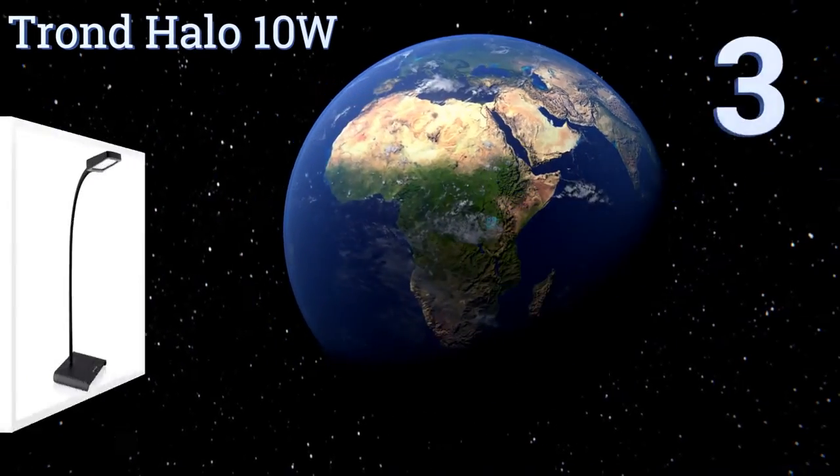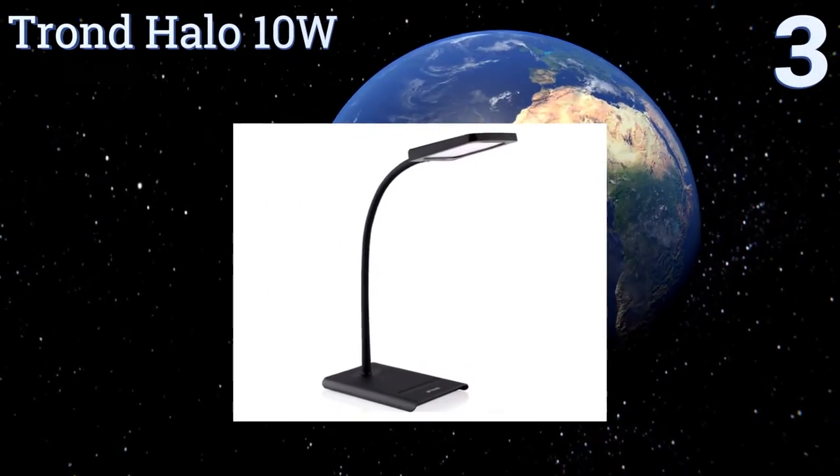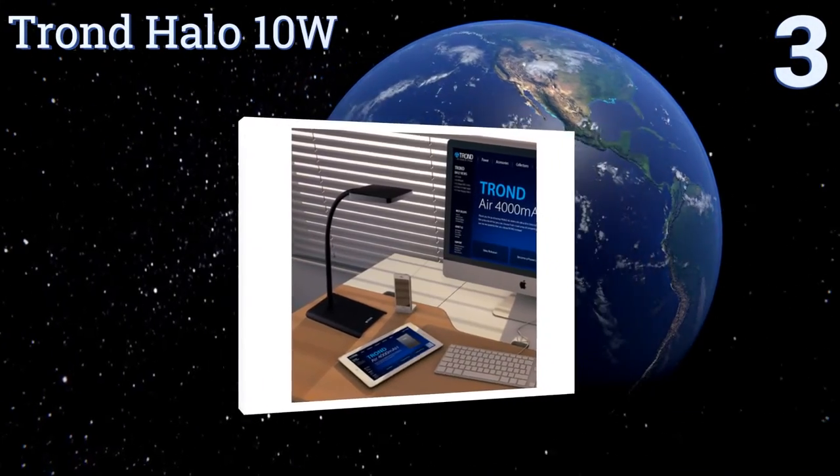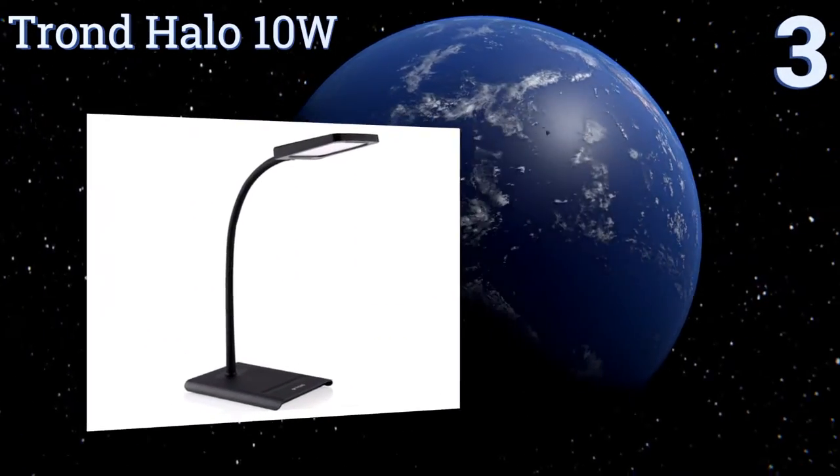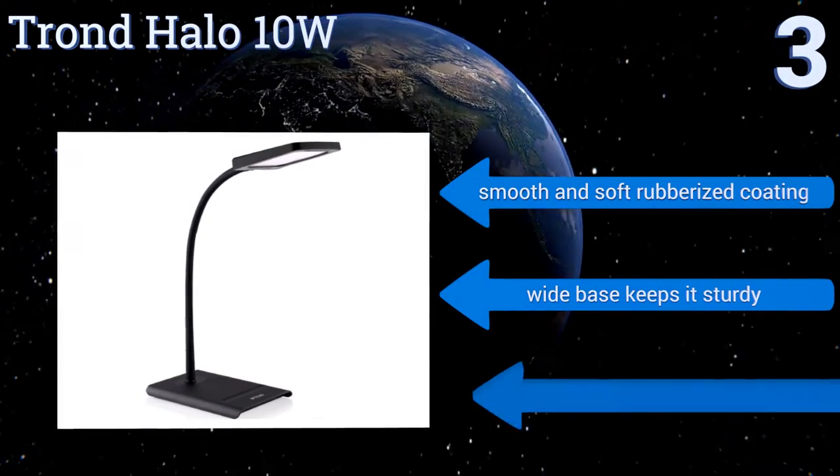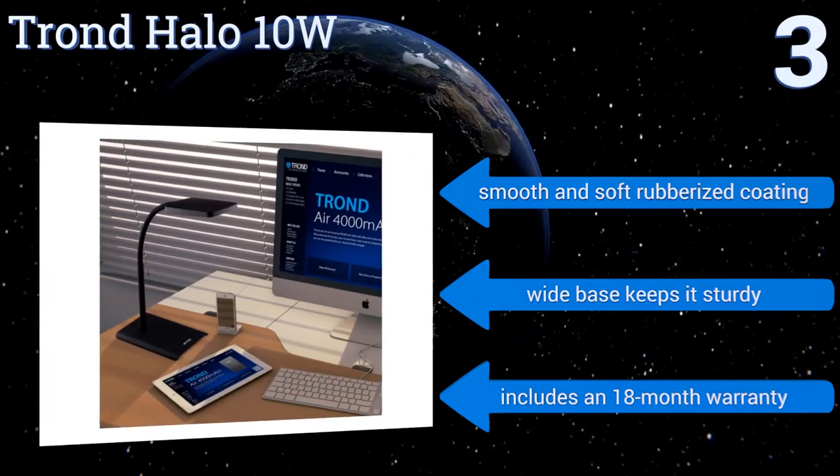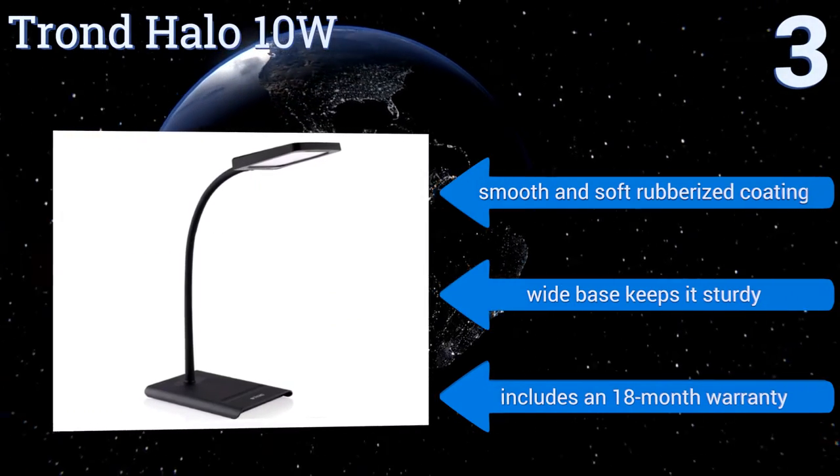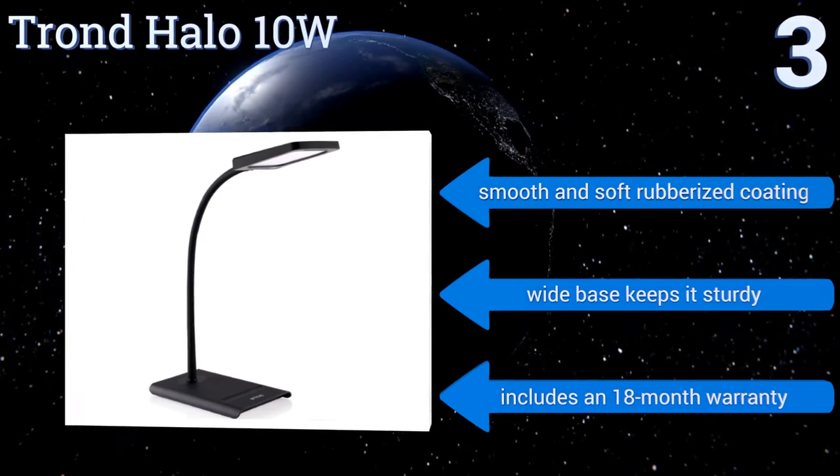Nearing the top of our list at number 3, when you want nothing but the best in customization, turn to the Trond Halo 10 Watt. It features an intuitive touch-sensitive base on which you can adjust between its 7 levels of light intensity and 3 color temperature settings. It has a smooth and soft rubberized coating and a wide base that keeps it sturdy. It includes an 18-month warranty.